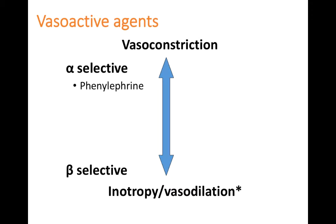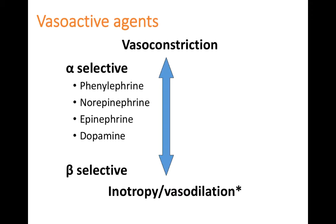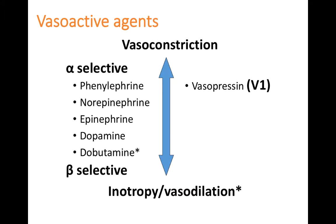For example, phenylephrine is a pure alpha agent, so think of it as causing vasoconstriction. Norepinephrine, epinephrine, and dopamine have mixed alpha and beta activity to different degrees, giving them some vasoconstriction and some inotropic effects. Dobutamine is more of a pure beta-selective agent — primarily beta-1 with some beta-2 — so its primary effects are inotropy and vasodilation. Vasopressin acts via non-adrenergic V1 receptors, but its net effect is vasoconstriction, similar to the alpha agents.